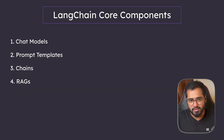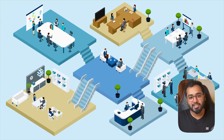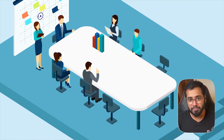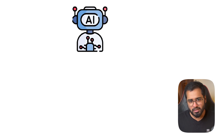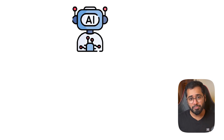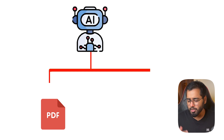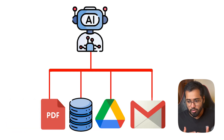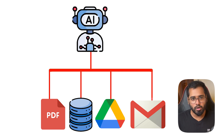Then we have RAGs. This is a pretty huge section in this course and it's one of those important technologies that are helping businesses to increase productivity. If you've ever heard of custom chatbots trained on a company's private data — the data could be in the form of PDFs, or from a database — and users can sort of chat with the data, then this is what's going on: RAGs, or retrieval augmented generation.